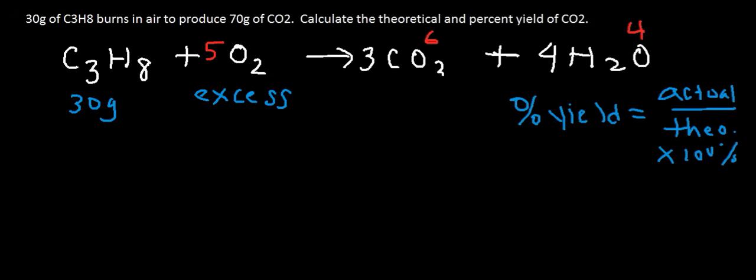The actual yield is usually given to you in a problem. It's typically the grams of product collected. We want to find the percent yield of CO2, so we need the actual yield of CO2 and the theoretical yield. They gave us the actual yield — 70 grams of carbon dioxide was produced in the experiment. What we don't know is the theoretical yield, the most we can get. So let's calculate the maximum amount of CO2 that is possible to get.